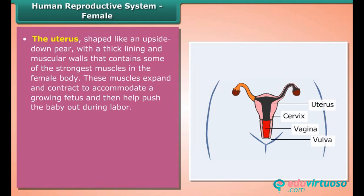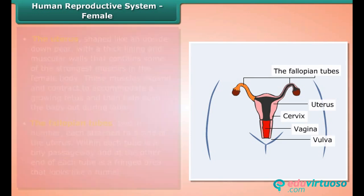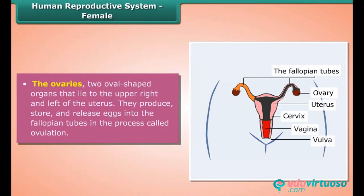The fallopian tubes, two in number, are each attached to a side of the uterus. Within each tube is a tiny passageway, and at the other end is a fringed area that looks like a funnel. The ovaries are two oval-shaped organs that lie to the upper right and left of the uterus. They produce, store, and release eggs into the fallopian tubes in the process called ovulation.